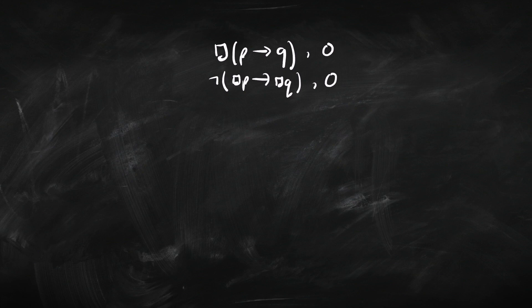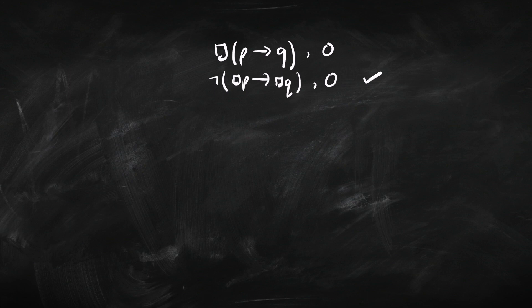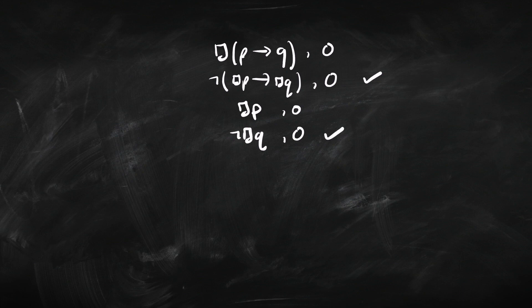Then we start applying the rules. I'm going to start off with this negation here, because that's not going to branch and it's not going to introduce any new worlds or anything like that. So always best to start off with rules like that. So we're going to get box P at zero and not box Q at zero — it's basically a propositional logic rule. Now I'm going to move on to this one here, because again that doesn't fiddle around with any tags. Tick that one off, and it's going to become diamond not Q zero.